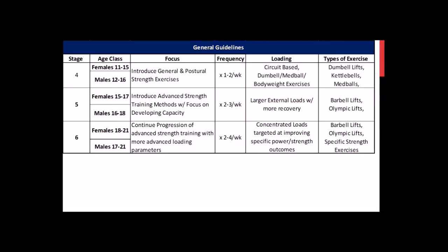As athletes increase in competency, they need more stimulus for continued adaptation — that's where periodization comes into play. Training frequency may increase to ensure the athlete is continually challenged, loading becomes more concentrated, and more specific strength exercises get implemented. For example, weighted sled sprints are a specific strength exercise for sprinting, and an overweighted shot put is a specific strength exercise for shot put.